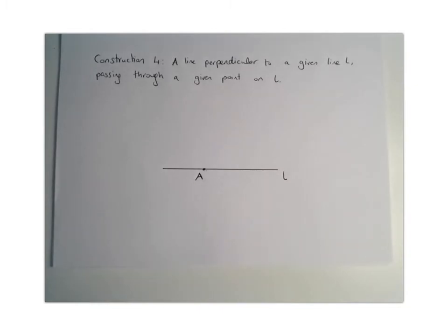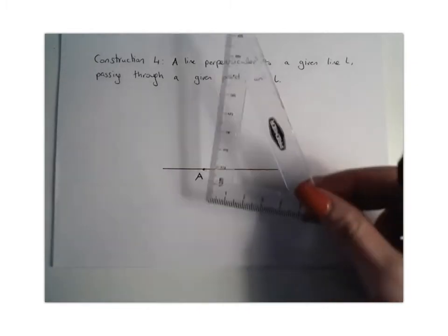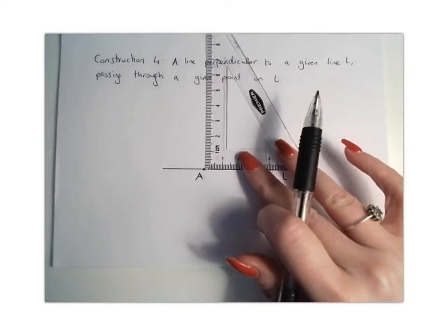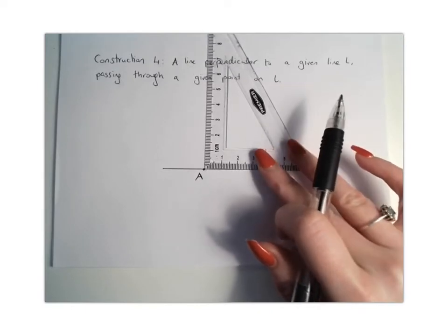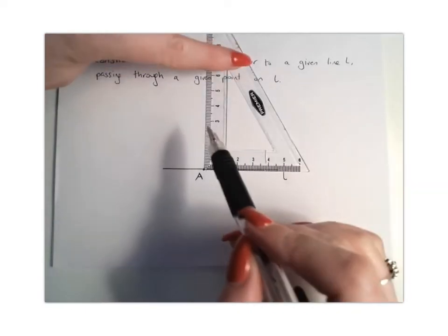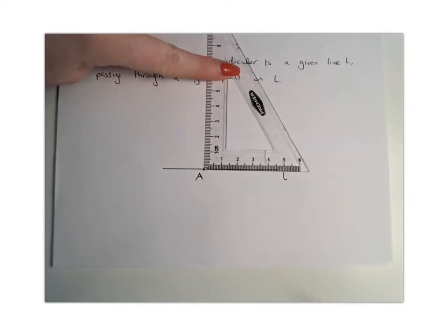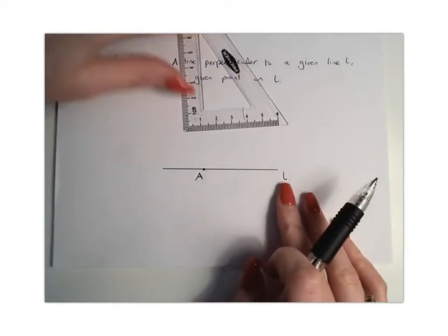There's two methods for this. The easier method would be to use your set square, line it up with your line L, and because it's 90 degrees, we can find that point and then draw our line, which will pass through A and be perpendicular to our line L.